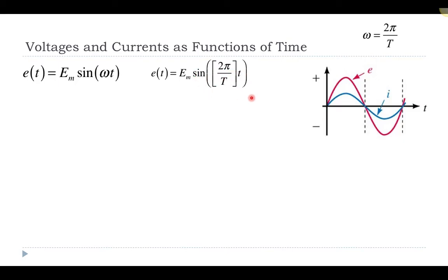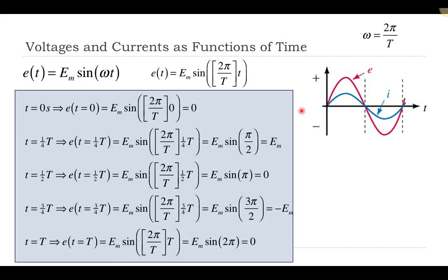Let's show that this makes sense. If I plug in time t equal to zero into this expression, then I put the time as zero — zero times anything is zero — so I get sine of zero, which is zero. So the voltage at time t equal to zero would be zero, and that makes sense, because that's right here on the graph.